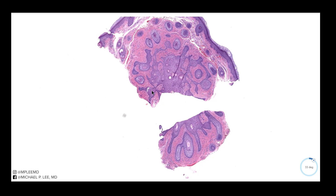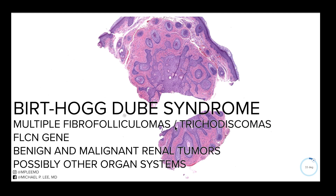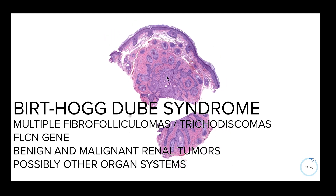Okay guys, I hope I covered everything. This is a difficult topic that frequently confuses people. The board answers here are Birt-Hogg-Dubé, multiple fibrofolliculomas, trichodiscomas associated with renal cell tumors and pulmonary pneumothorax. FLCN is the gene. Thanks again, guys. If this has helped you, please like, subscribe, and share with others who might find this useful. Have a good night.